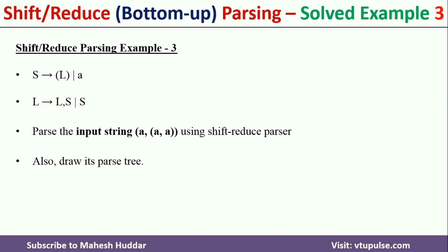In this case we have been given a grammar with two rules. The first one is S → (L) or A. The second one is L → S or L,S. The input string given to us is (A,(A,A)). We want to validate whether this input string is valid or not with respect to the given grammar, and also draw the parse tree for it.